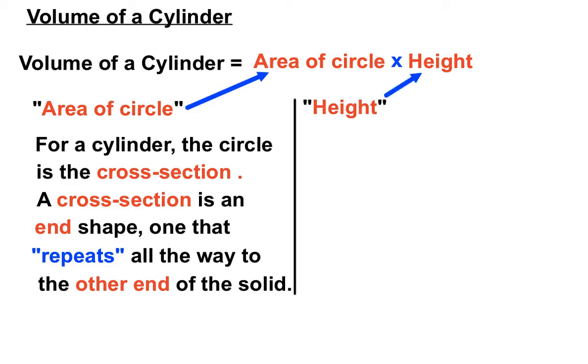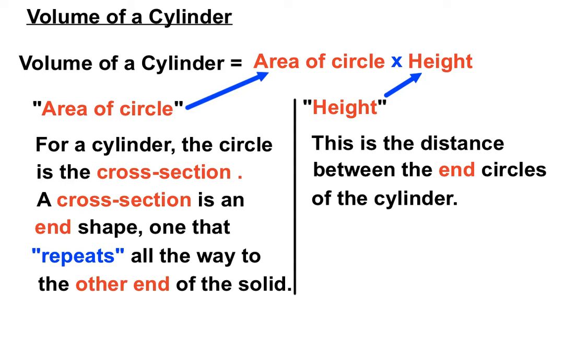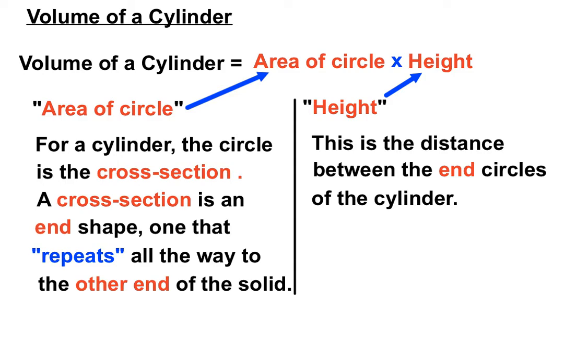And the height of the cylinder, it depends on whether the cylinder is standing up or lying down, but the height is the distance between the two end circles of the cylinder. Often, if the cylinder is lying down, it's not going to be a vertical height, but how far back that circle goes to get to the other end circle.